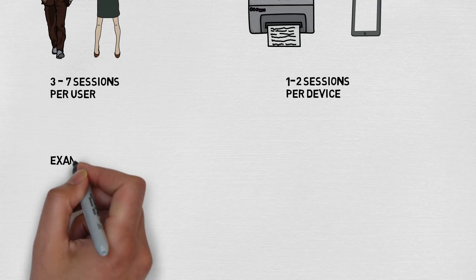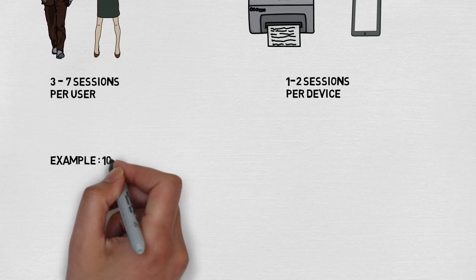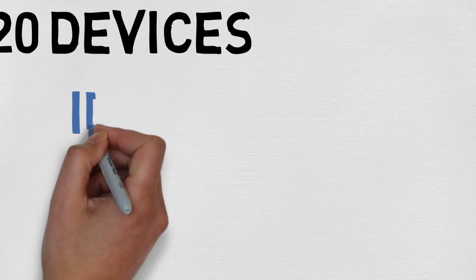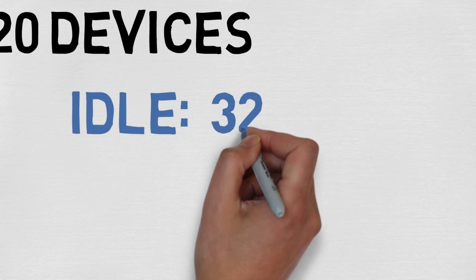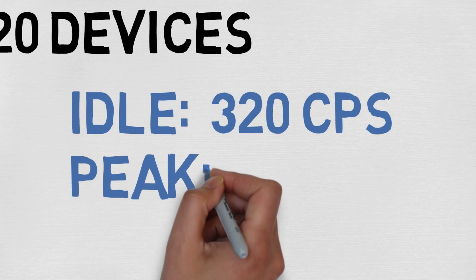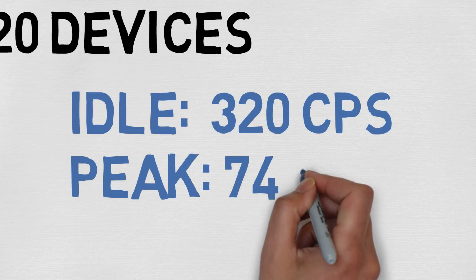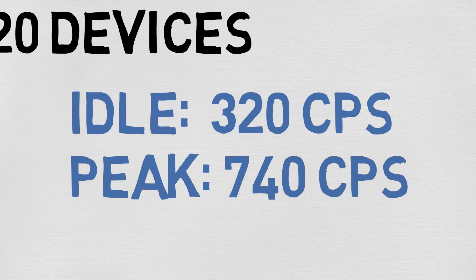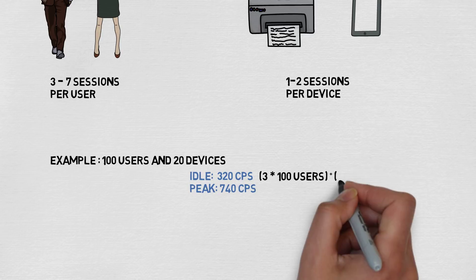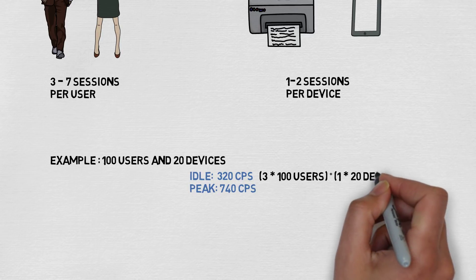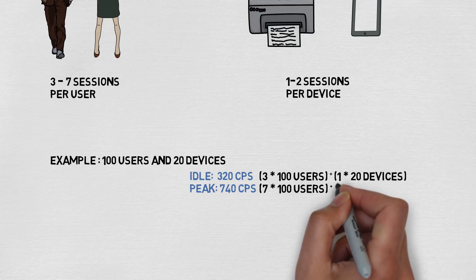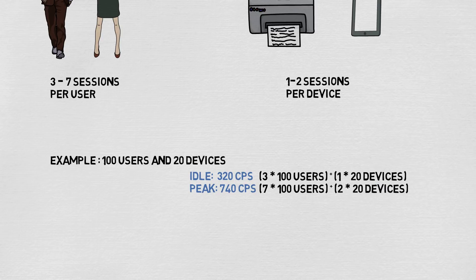As an example, with a hundred users and twenty devices, you would expect to see anywhere between 320 to 740 connections per second. The 740 connections per second would probably be during peak time, such as after lunch or when users are logging in for the first time. Don't forget to consider potential growth in your users and devices, so make sure you pad your requirement for that expected growth.